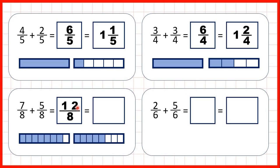But what is twelve-eighths as a mixed number? Well, if we combine to make one whole, that gives us one and four-eighths. That's because twelve divided by eight is one remainder four, because one times eight is eight and then we need four more to get to twelve.